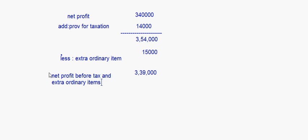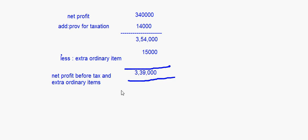Now after that we have to do the adjustments for non-cash expenses and the working capital changes. We will continue with this question in our next session, taking up this net profit before tax and extraordinary items and computing the rest to arrive at the cash flow from operating activities.